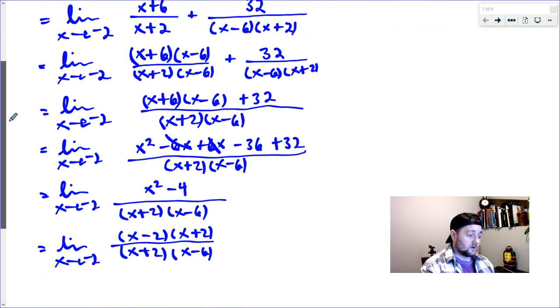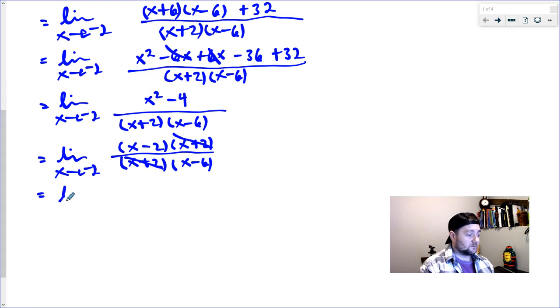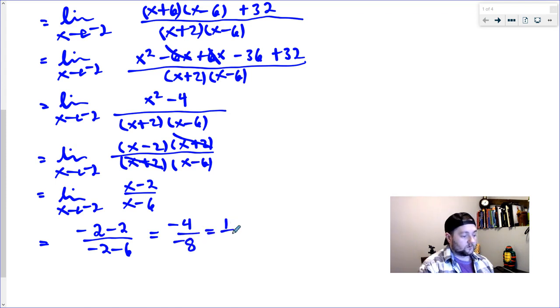And then what we want to do is like I predicted up at the very top, x plus two is going to cancel. That's exactly what's happening right here. That x plus two is going to cancel. And then we can rewrite and we're ready to sub. And like I said many times before, this step is kind of optional, but if you want a nice, beautiful answer, this will help you out. So then I'll sub the negative two in, negative two minus two, and then negative two minus six. And that ends up being negative four over negative eight, or a beautiful one over two.